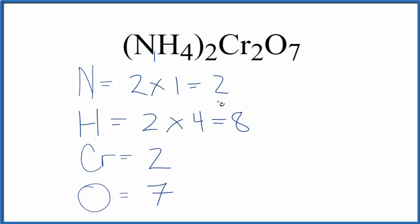So that's the number of each atom we have in ammonium dichromate, this (NH4)2Cr2O7. If we add all of these numbers up, we get 2 plus 8 is 10, plus 2, that's 12, plus 7, 19 total atoms for (NH4)2Cr2O7.